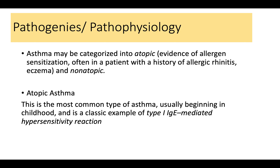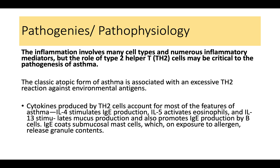Asthma may be categorized into two types: atopic and non-atopic asthma. In this video we're talking about atopic asthma, the more common type, usually beginning in childhood. It is a classical example of a type 1 IgE-mediated hypersensitivity reaction, caused by allergens such as pollens. The inflammation primarily involves Th2 helper cells, which play a critical role. People with asthma typically have an increased number of Th2 helper cells, or increased hypersensitivity of these cells — commonly referred to as a type 1 hypersensitivity reaction.